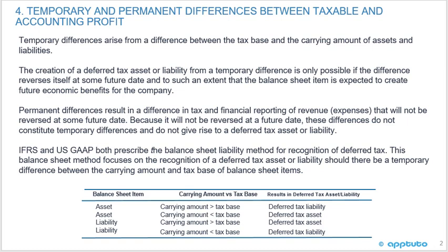Permanent differences result in a difference in tax and financial reporting of revenue and expenses that will not be reversed at some future date. Because it will not be reversed, these differences do not constitute temporary differences and do not give rise to a deferred tax asset or liability.